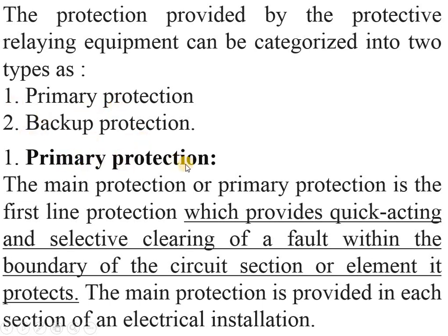Primary protection is the main protection — it is the first line of protection which provides quick acting and selective clearing of a fault within the boundary of the circuit section or element it protects. It is also called the first line of defense, and whenever there is a fault or abnormal condition, this primary protection scheme has to sense that abnormal condition.